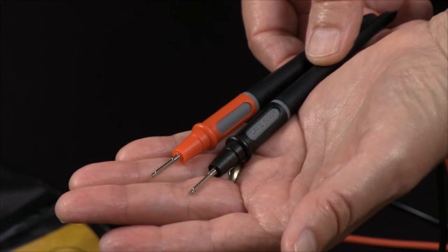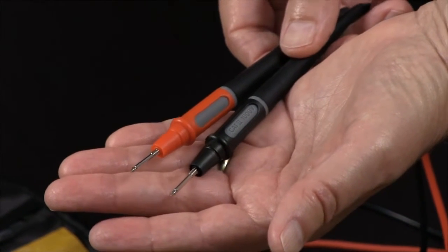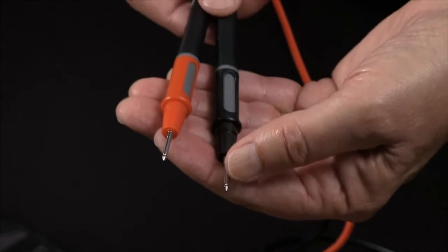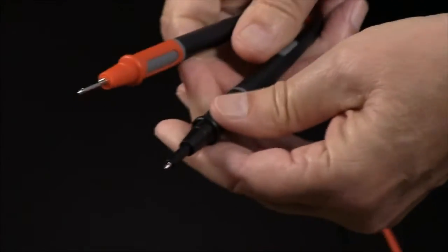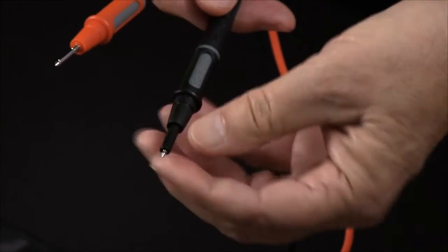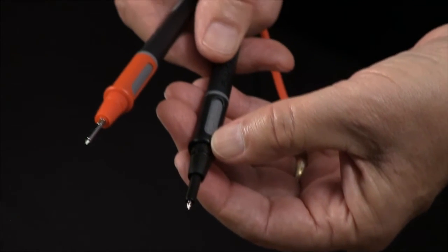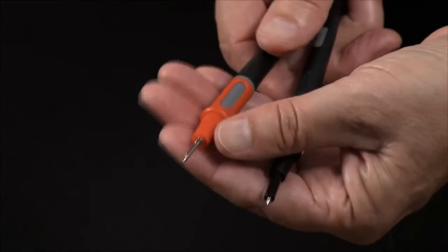But when you get into a high energy electrical situation, you need something with less exposed metal. In this configuration, these probes are rated Category 2, 1000 volts. But they have a twist cover capability, and when you reduce the amount of exposed probe tip, the category rating goes to Category 3, 1000 volts, and Category 4, 600 volts.